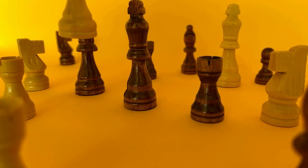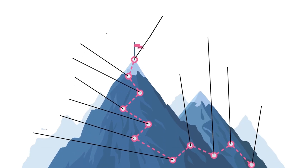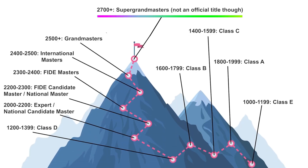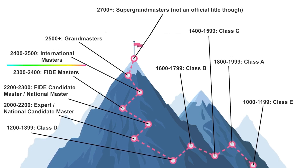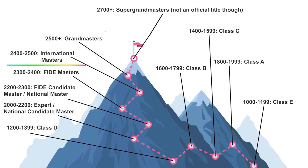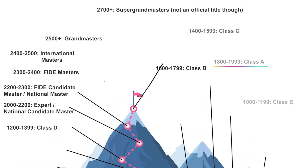Here are some rating categories and their corresponding ELO ranges. If a player is 2700+, they would be considered a Super Grandmaster. If a player's rating falls in the 2400 to 2500 category, they would qualify for the International Master's title. Similarly, if a player's rating falls between 1800 to 1999, they would be considered an A-class category player.